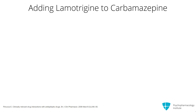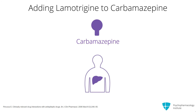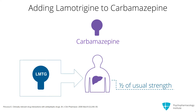Next drug interaction: lamotrigine and carbamazepine. This is pretty simple. If carbamazepine is already in place, then you have the enzyme induction from carbamazepine already in place. So lamotrigine will come in at half of its usual strength — you could start it at twice its usual strength. But why take that risk for maybe two weeks? I would just start it in my usual fashion and relax even a little more about the potential for inducing a rash when I add lamotrigine.